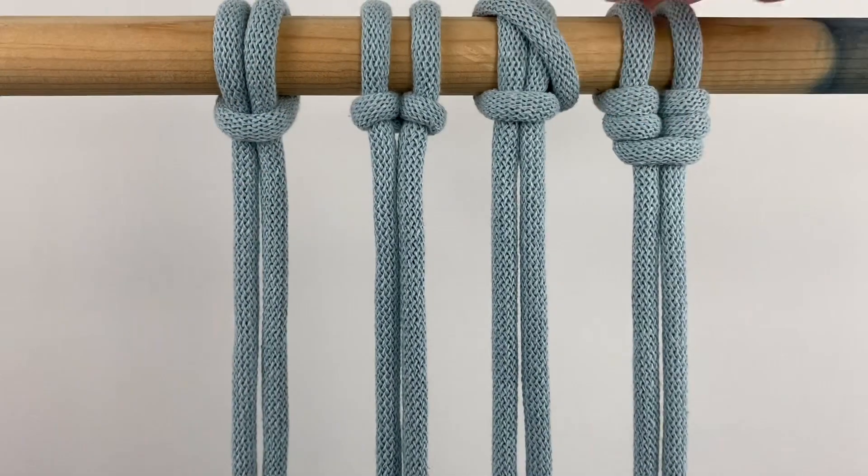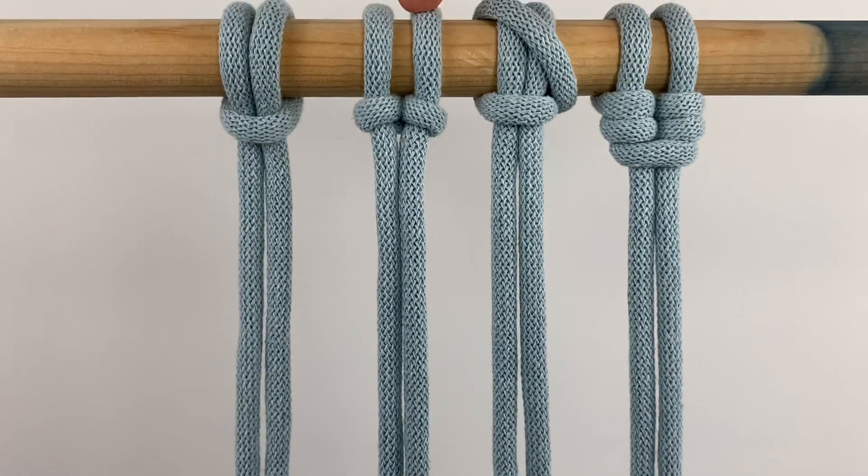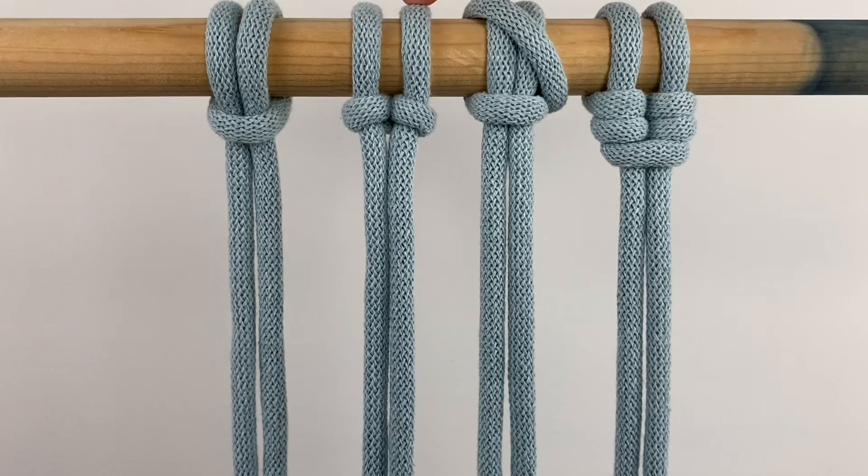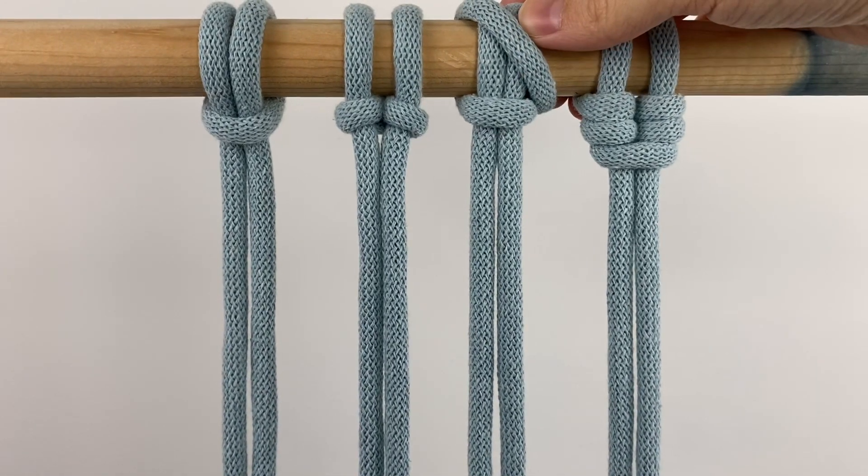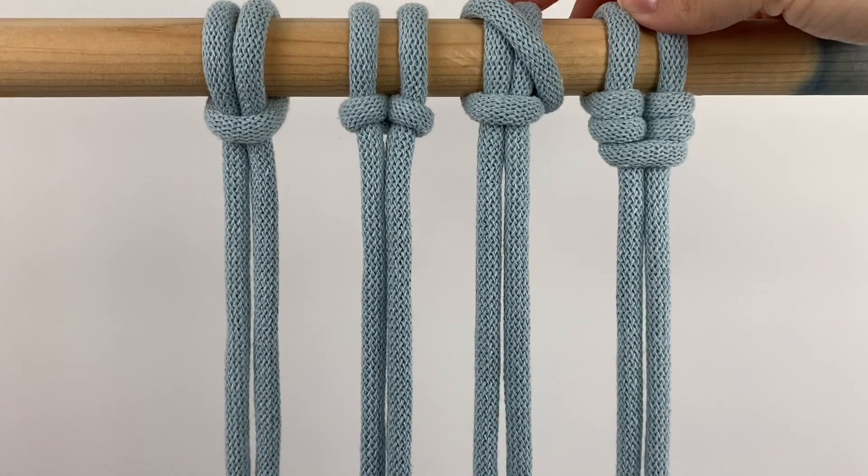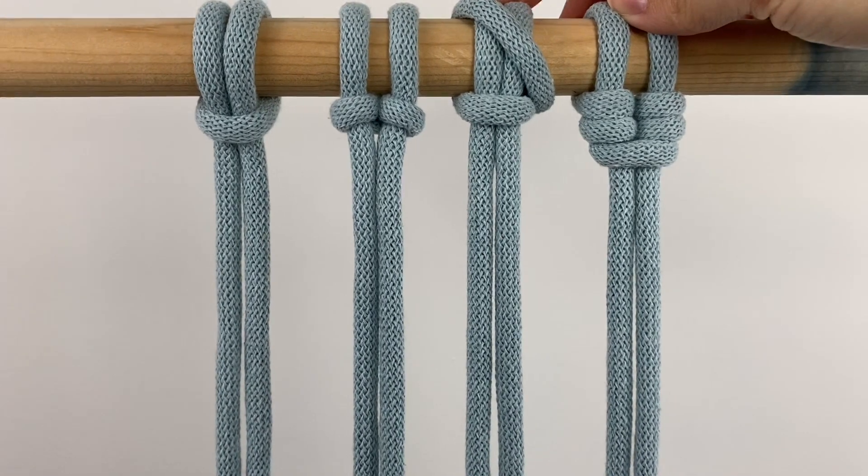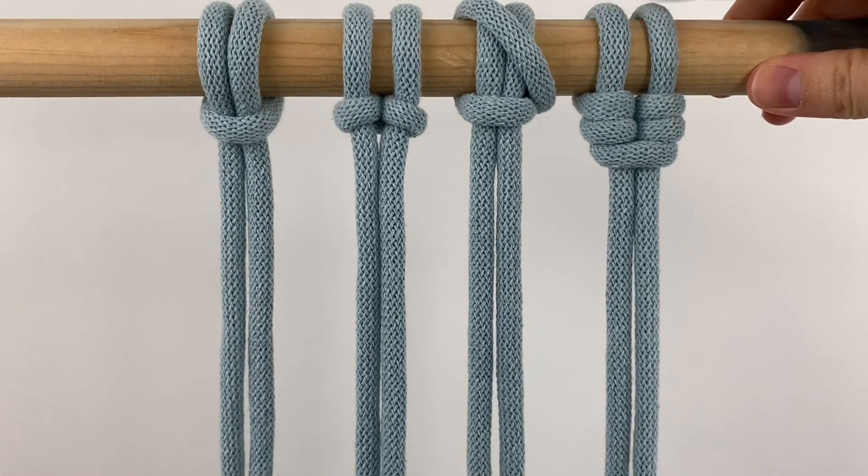So here are some other alternatives. Here we have the slingstone knot or the slingstone hitch, and this one I honestly cannot find out what the actual name is, but I'm going to just call it a reinforced larks head knot. Then we have the cat's paw knot right here.